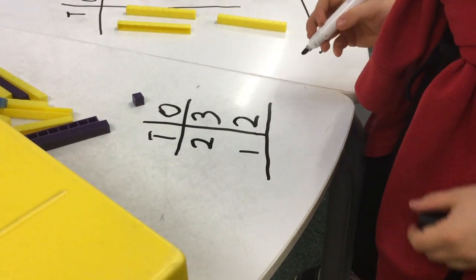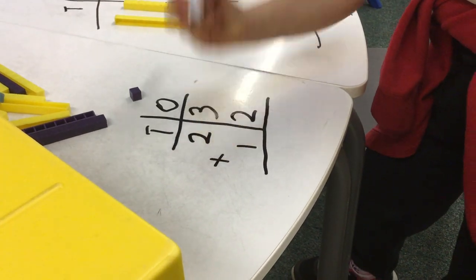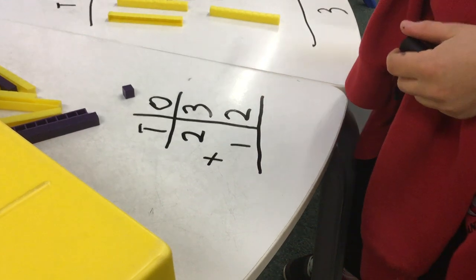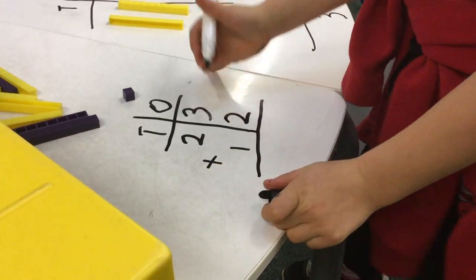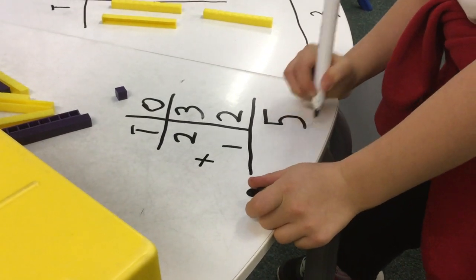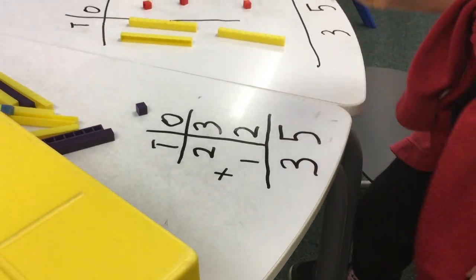What do we need to make sure we put on there as well? What symbol? The equals. Good girl. And we always start with the ones. Good. Off you go then. Three, four, five. Two, three. Fantastic.